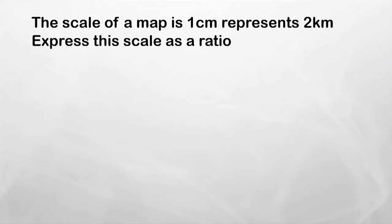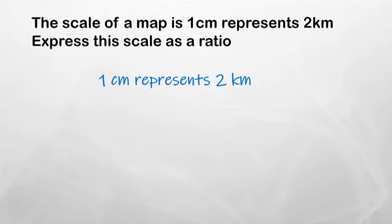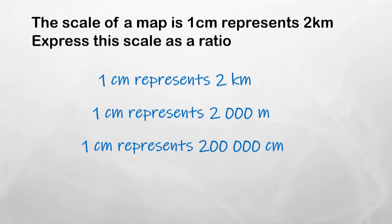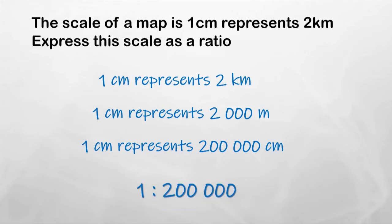Let's look at some exam-style questions. The scale of a map is one centimetre represents two kilometres — express this as a ratio. To express it as a ratio I need both measurements in the same units. I change kilometres to metres by multiplying by a thousand, then metres to centimetres by multiplying by a hundred. Now both are in centimetres, so I can write them as a ratio: one to 200,000.